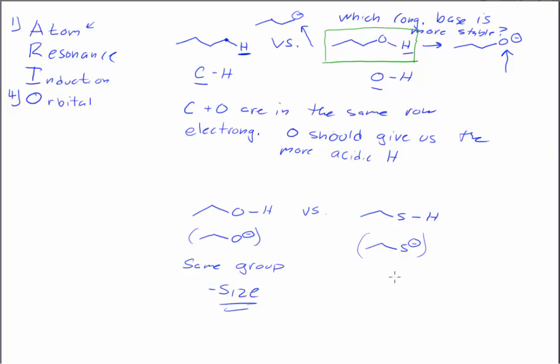As we go down a group, we gain size. The S is a larger atom than the oxygen. And as size increases, anion stability also increases. The larger atom is better able to stabilize the negative charge because it has a larger number of electrons. If we have 100 electrons and add one more to get 101, that's less of a change than if we had 10 electrons and added one more to get 11. Giving sulfur one more electron is not a really big deal. That's why the larger atom will always be a more stable anion.